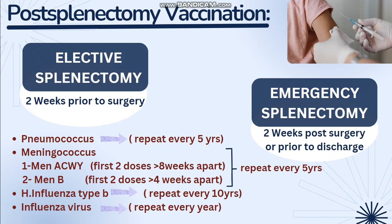For meningococcus: MenACWY vaccine — give the first two doses eight weeks apart; MenB — give the first two doses four weeks apart; then repeat these vaccines every five years. For H. influenzae type B, repeat the vaccine every 10 years.